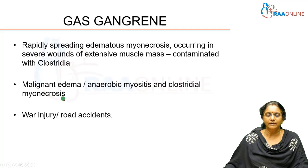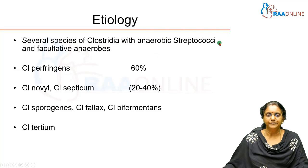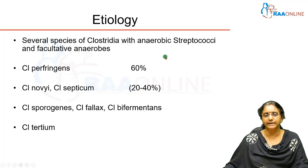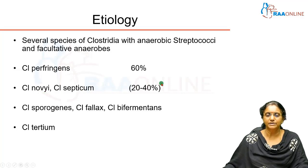The causative agent of gas gangrene is actually polymicrobial. Several species of Clostridium mainly cause infection along with anaerobic streptococci and other facultative anaerobes. Among the clostridia, the most common is Clostridium perfringens, causing almost 60% of wound contaminations. Other known organisms are Clostridium novyi and Clostridium septicum, constituting 20–40% of cases.